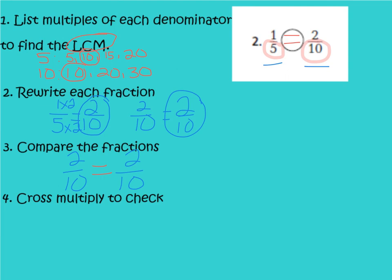Our final step is that we can cross-multiply our fractions to check. We're going to start with our original fractions, which were 1-fifth and 2-tenths, and we are saying that they are equal to each other. And we can cross-multiply: 10 times 1 is 10, and 5 times 2 is 10. They are indeed equal.